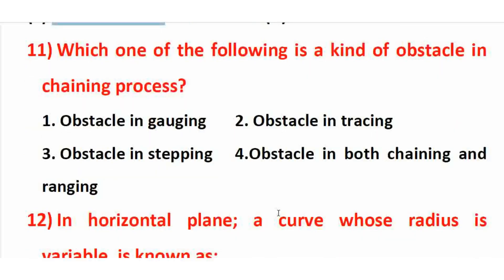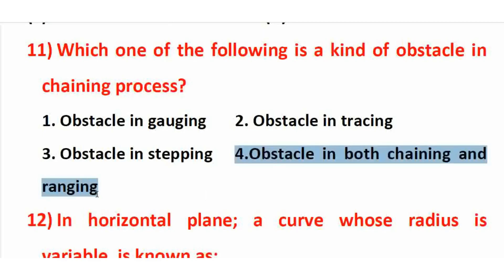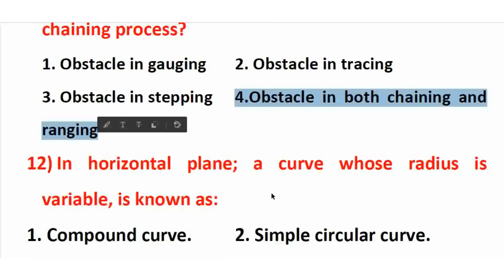Which one of the following is a kind of obstacle in the chaining process? In chaining, there are obstacles to chaining only, obstacles to ranging only, and obstacles to both chaining and ranging. The right answer is option 4 — obstacle to both chaining and ranging.